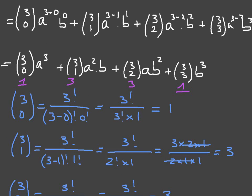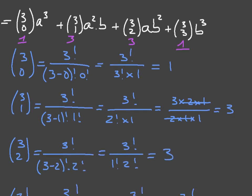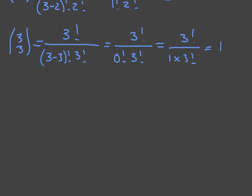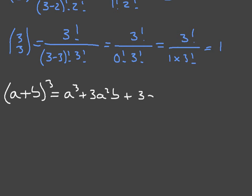And we're pretty much done. Using all the results we just found, we can state that (a + b) cubed equals a cubed plus 3a squared b plus 3ab squared plus b cubed. And that's how we use the binomial expansion formula.